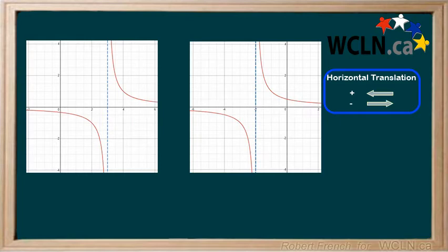For the first graph, we see that the vertical asymptote is at x equals 3. Therefore, when writing the equation, we subtract 3 from x.